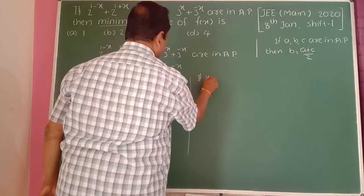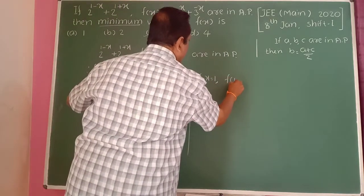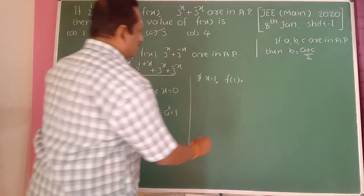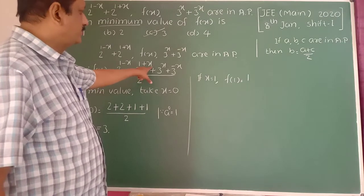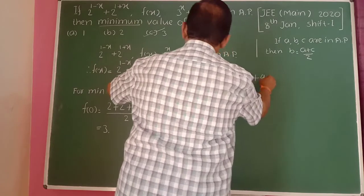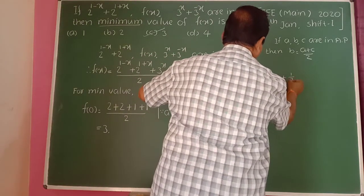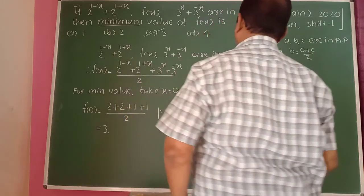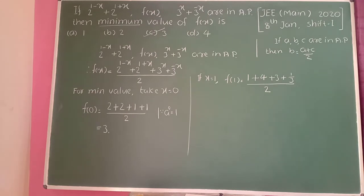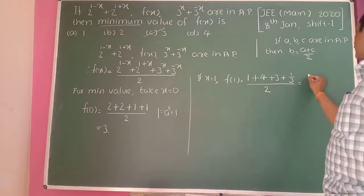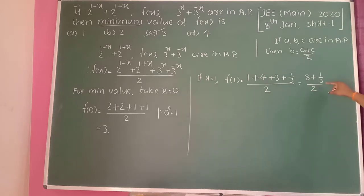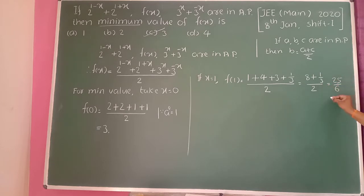Suppose we take x equal to 1: f of 1 becomes 2 raised to 0, which is 1, plus 2 raised to 2, which is 4, then 3 raised to 1 is 3, plus 3 raised to minus 1 is 1/3, all divided by 2. So 1 plus 4 is 5, plus 3 plus 1/3 gives approximately 25/3, divided by 2, which is about 25/6, greater than the minimum.